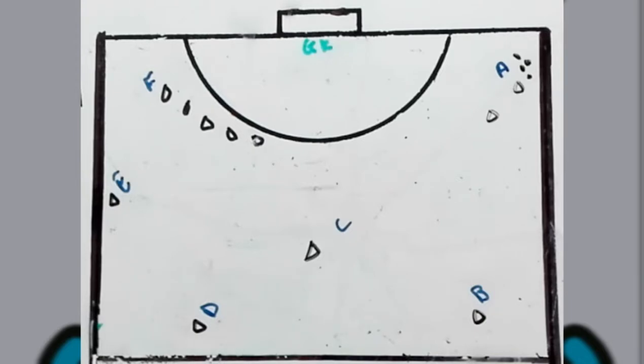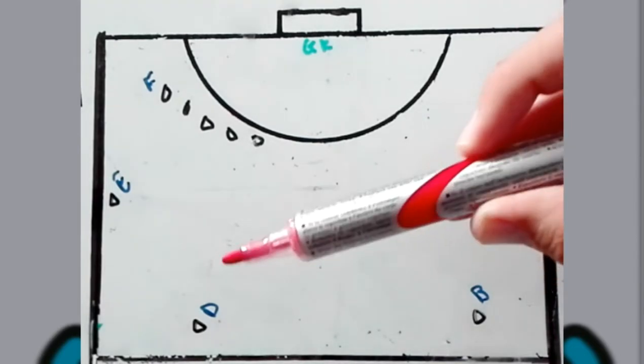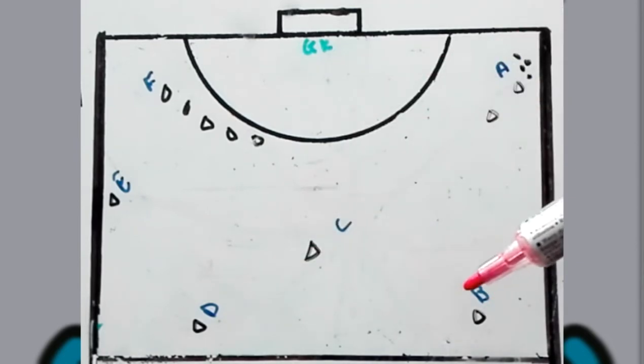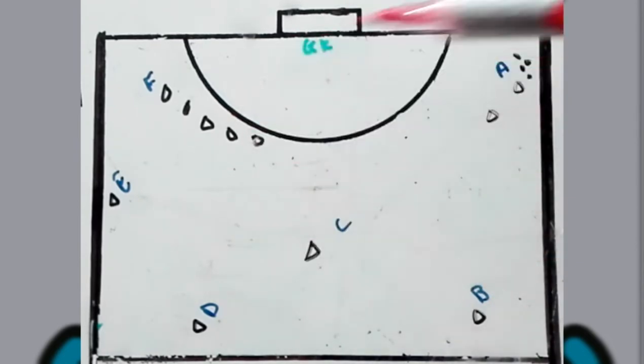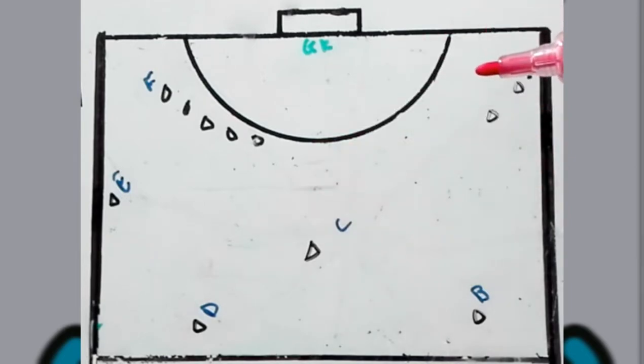So how it will work is we'll all start at A. The players will follow their pass as soon as they're done, and you can, as a coach, as soon as it gets to player C, the next ball can go. So it can keep flowing for the set amount of time that you decided to use this drill.